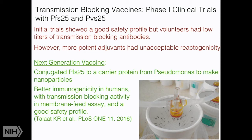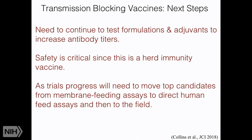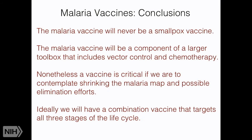The next step will be to continue testing formulations and adjuvants to increase antibody titers. Safety is critical since this is a herd immunity vaccine. As trials progress, we'll need to move top candidates from membrane feeding assays to direct human feed assays and then into the field. My concluding point is that the malaria vaccine will never be a smallpox vaccine — it will be a component of a larger toolbox that includes vector control and chemotherapy. Nonetheless, a vaccine is critical if we're going to contemplate shrinking the map and possible elimination. Ideally it will combine both the transmission stages and the blood stages.